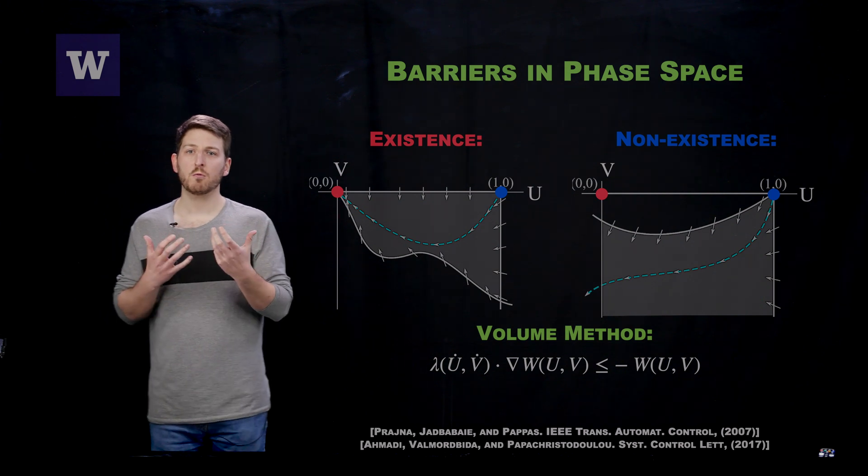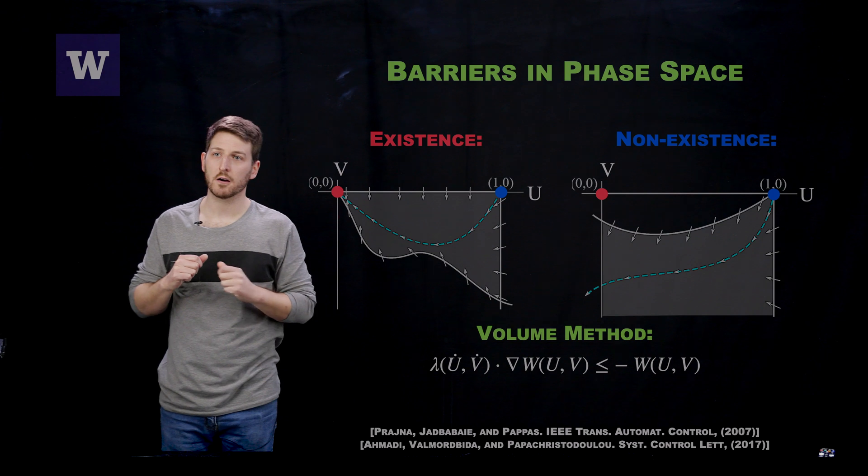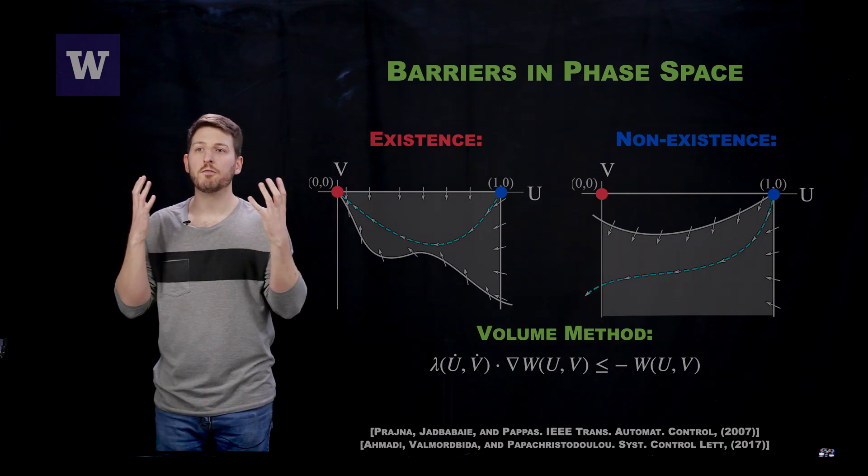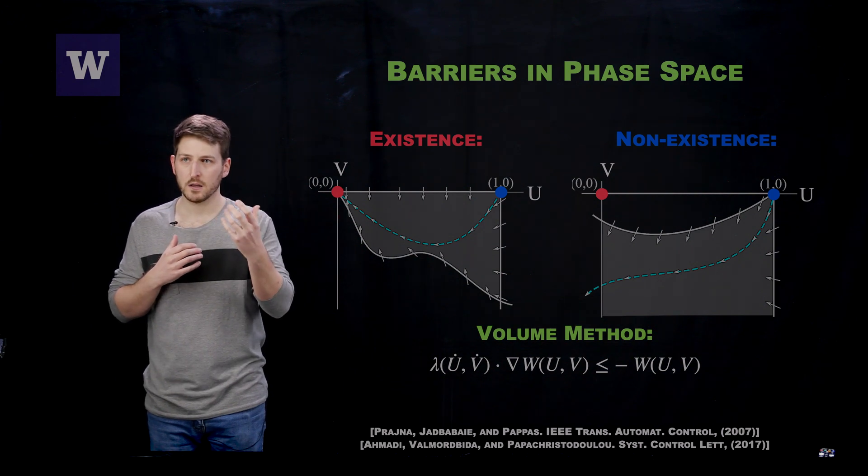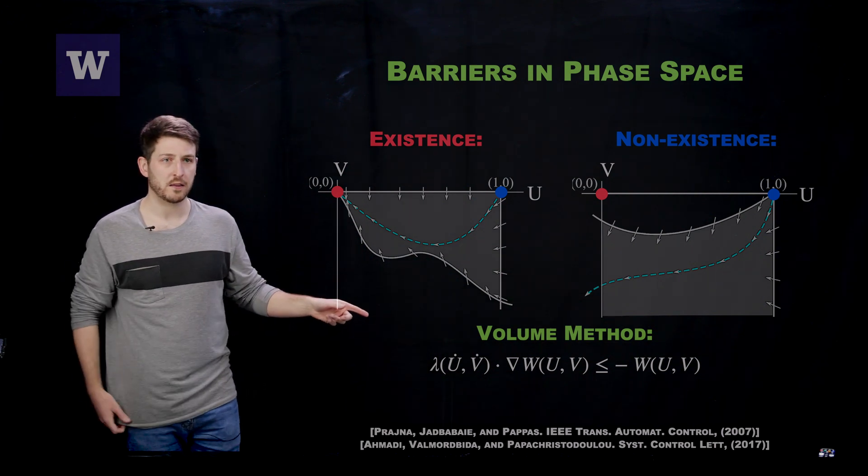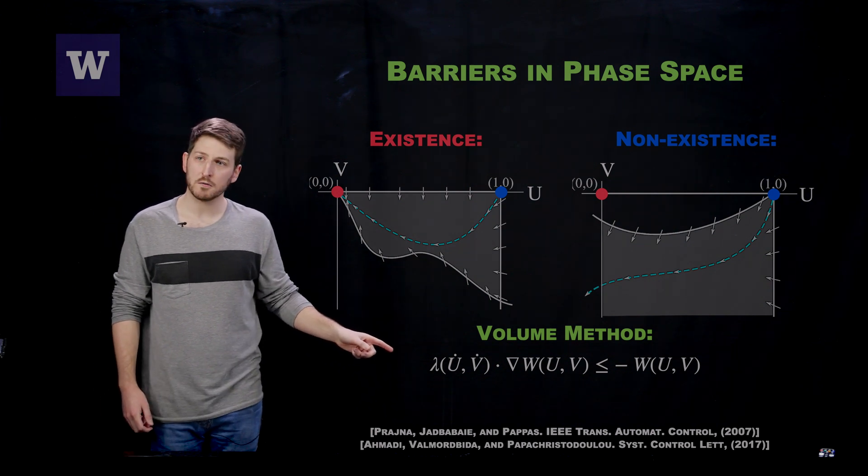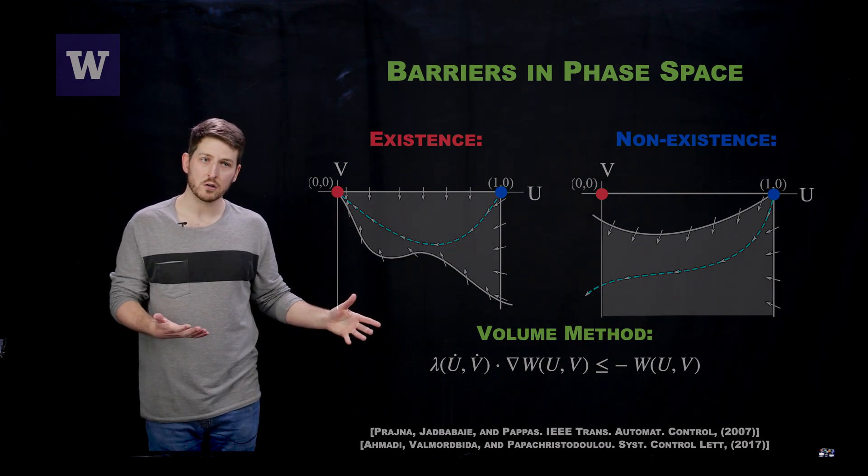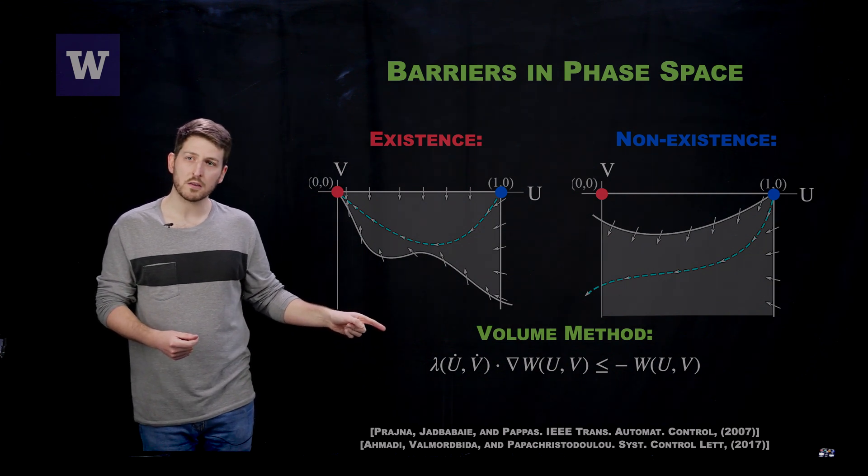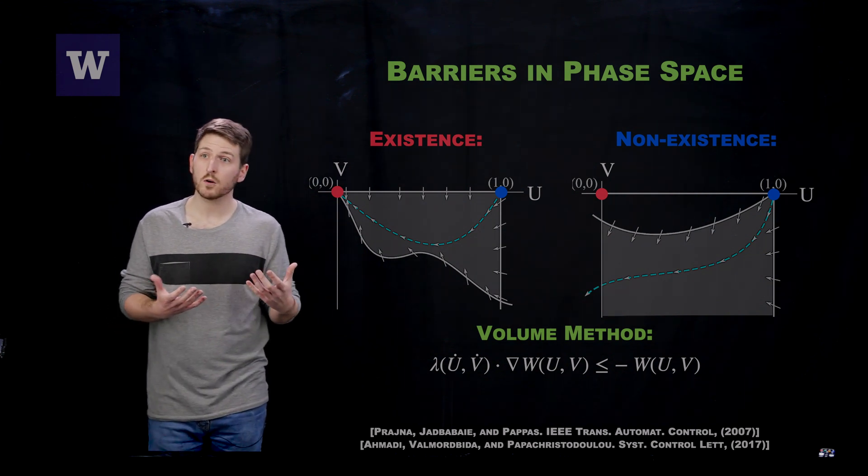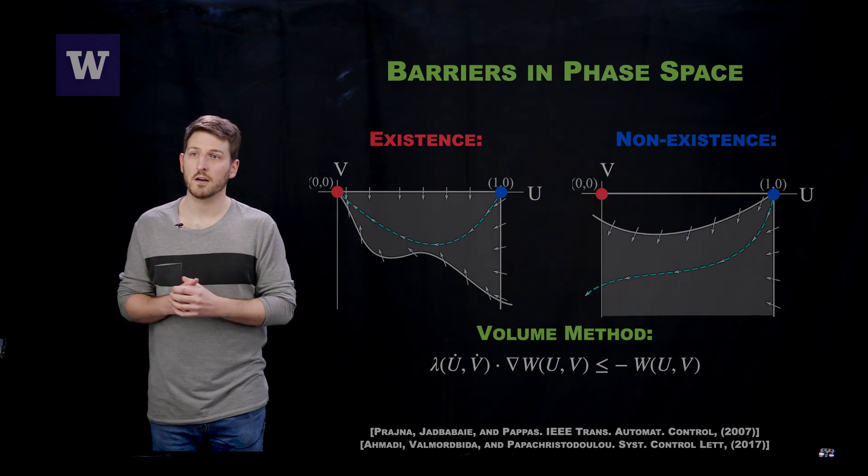What they work to do is instead of looking for a one-dimensional curve that forms a barrier, you look for a full volume that will be forward invariant for your system. We refer to this as the volume method. The equations that are required to be satisfied for a general functional W are right here on the board. What you can notice about them is that they are linear. Therefore, this is a convex inequality that needs to be satisfied for a function W.